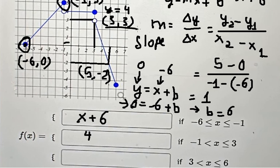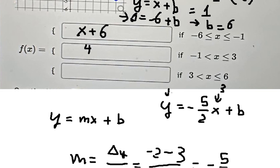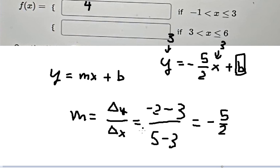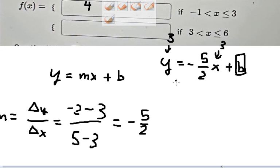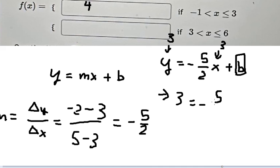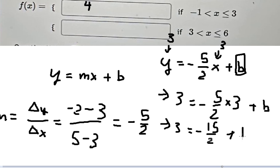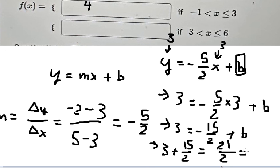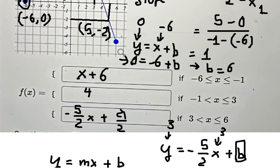I select the point (3, 3) to find b. Substituting: 3 = (-5/2)(3) + b, so 3 = -15/2 + b, giving b = 3 + 15/2 = 21/2. So the final answer for this piece is y = -5/2 x + 21/2.